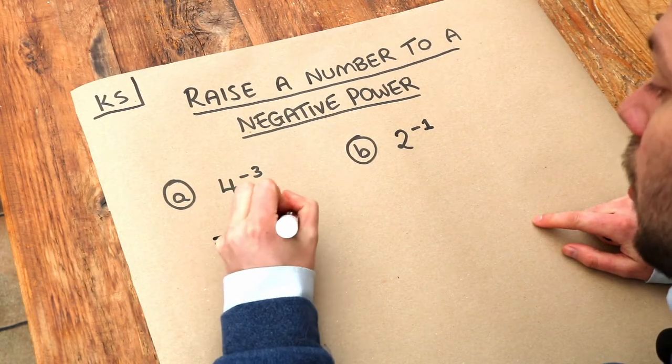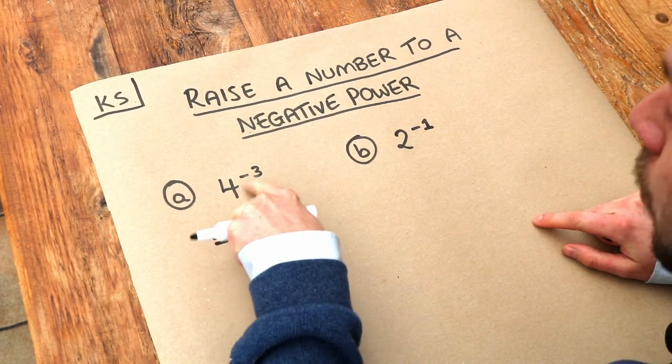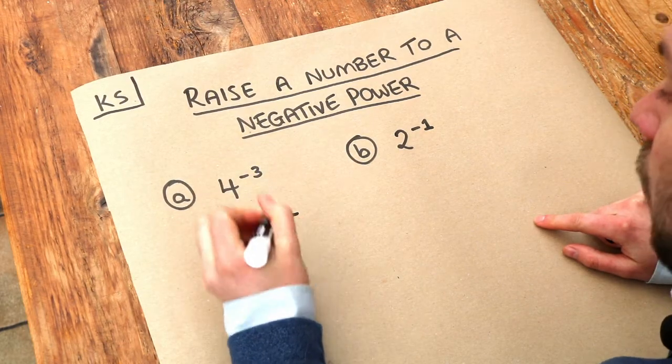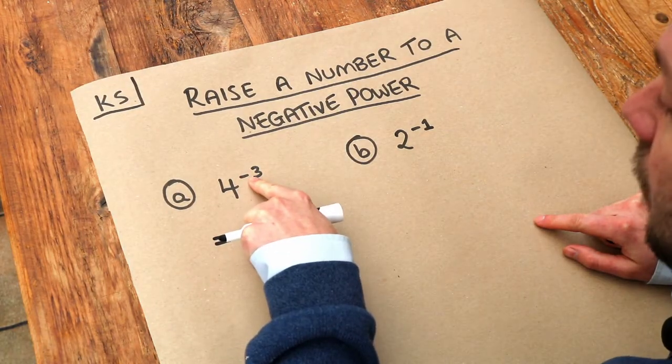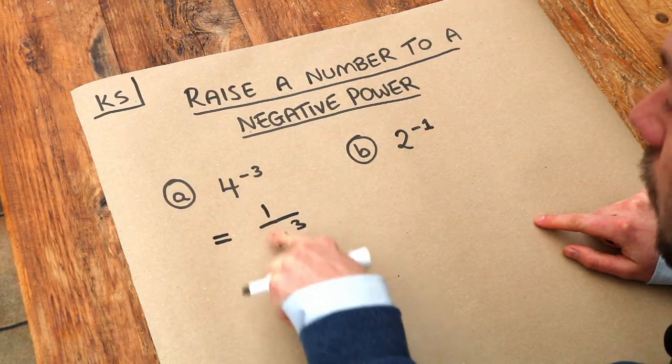So I'm just going to do 1 over and then instead of 4 to the minus 3, I'm just going to write the same but without the negative index like that. So if you have a negative index, you just do 1 over that power.